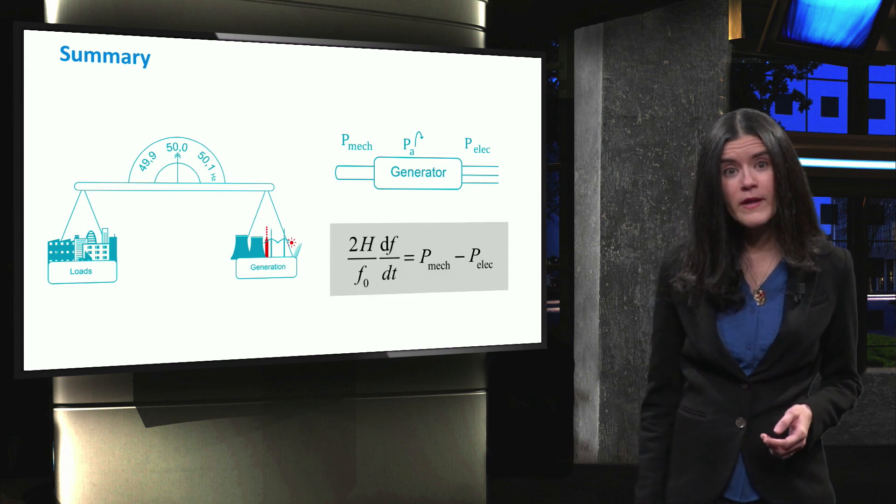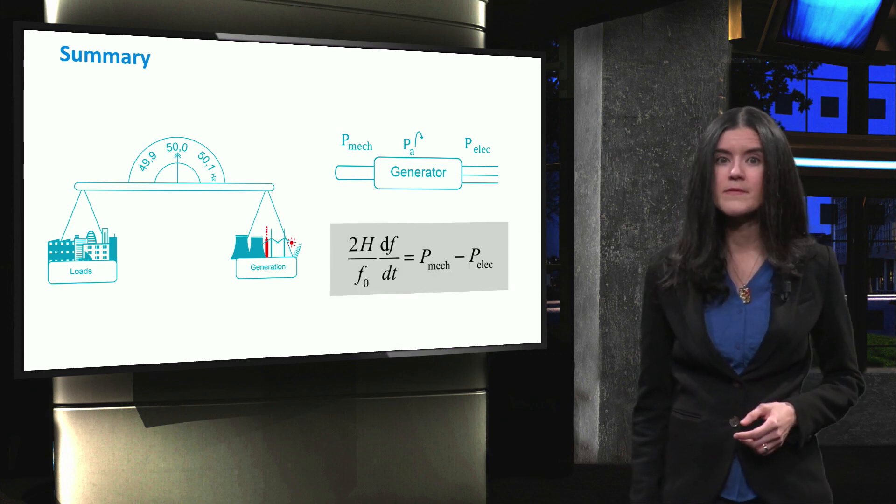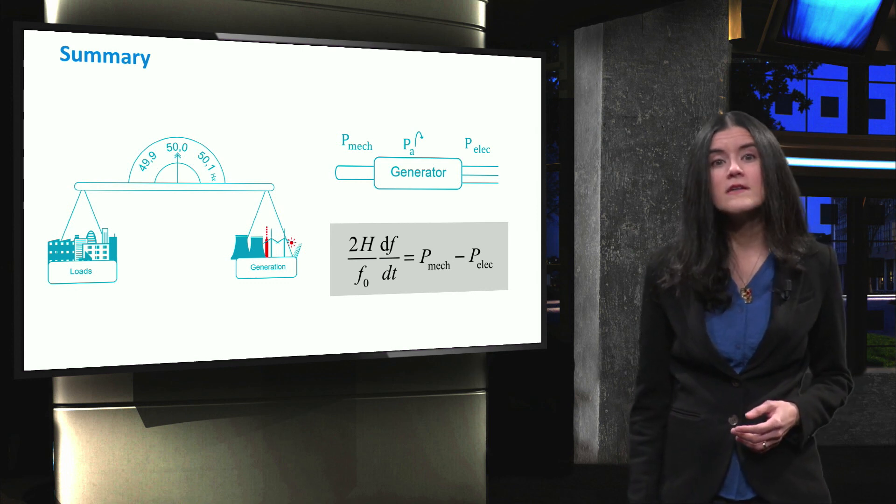The higher the inertia of the generator, the higher the accelerating power. This effect, given by inertia, determines the speed at which the system can recover from frequency drops.